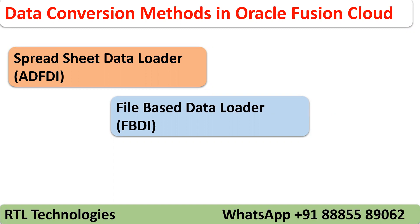With FBDA we have the flexibility to run these programs from Fusion Applications, schedule them, or call them from another integration tool called OICS — Oracle Integration Cloud Services. There is more flexibility when a technical developer wants to make changes or run programs. FBDA is used in those cases. With Spreadsheet Data Loader, you download the template, open it, enter credentials, enter the data, and the spreadsheet validates it — it won't allow invalid data.